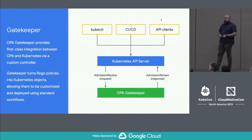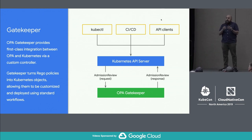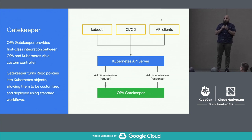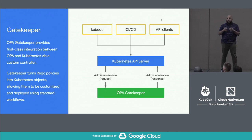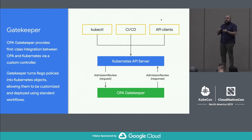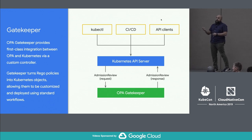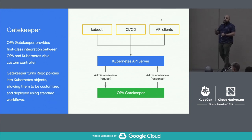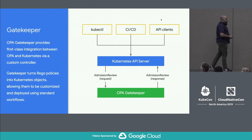Gatekeeper extends the approach that Open Policy Agent gives you. With OPA, you write your rules in Rego, then give that to OPA and it executes those rules based on inbound queries. With Gatekeeper, you take that Rego code and embed it inside a custom resource, then give that to Gatekeeper. Now Gatekeeper knows about a new CR in the cluster, and it can build constraints based on that rule you just gave it.